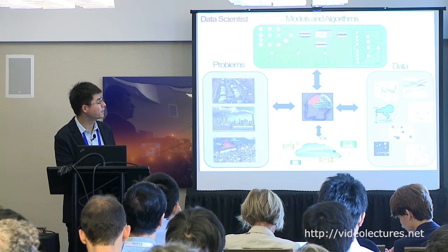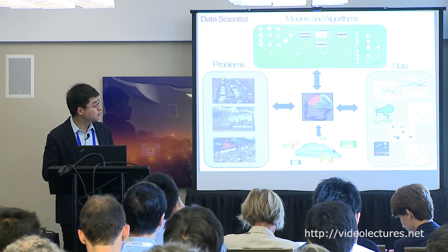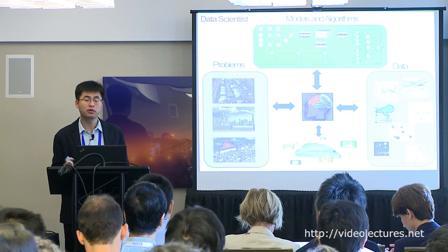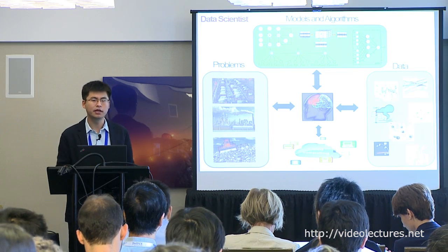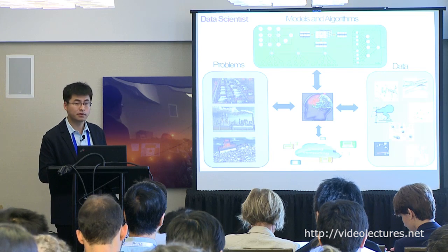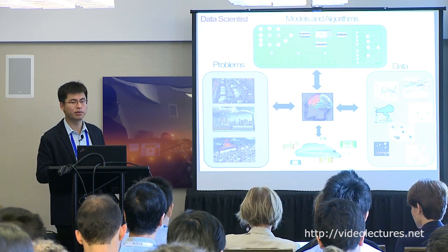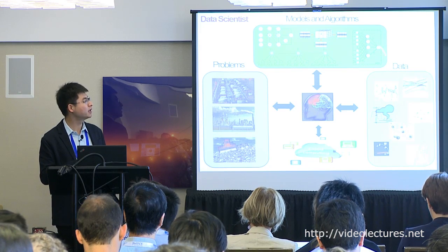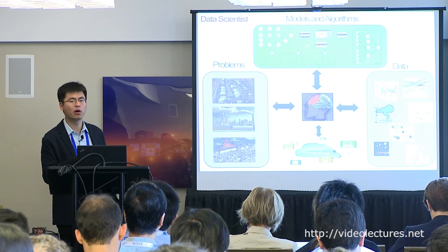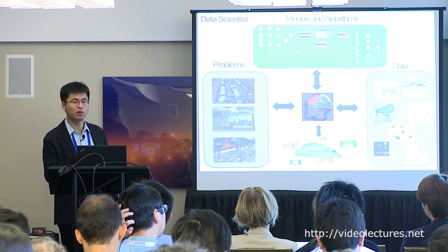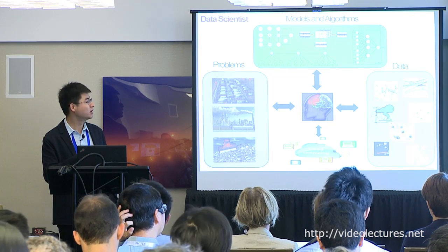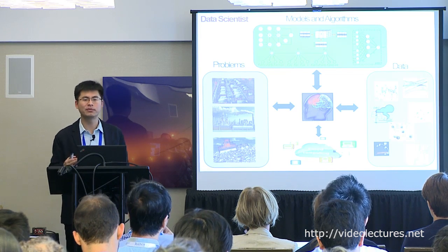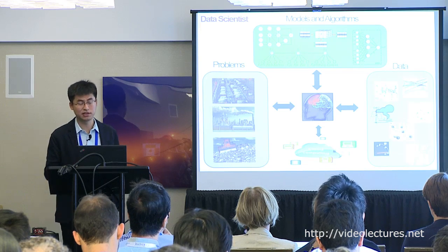A data scientist stands on a cloud computing platform, looks at the problem, thinks about the data, feeds the data into different types of models, aggregates those models organically, and deploys them on the platform to solve real-time problems dynamically. That is what a real data scientist does — it is very, very difficult.